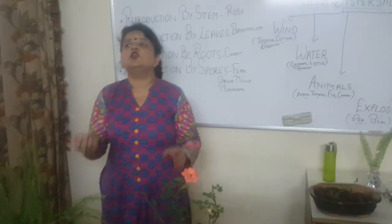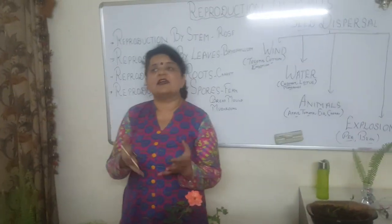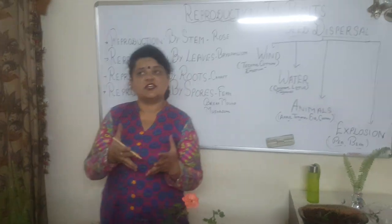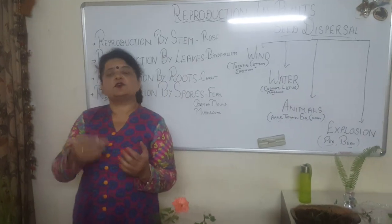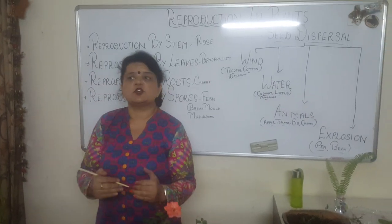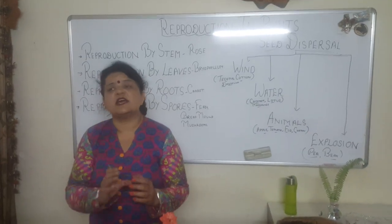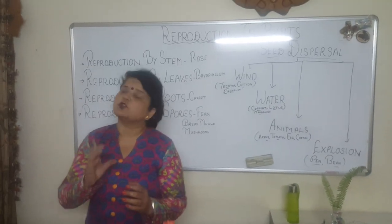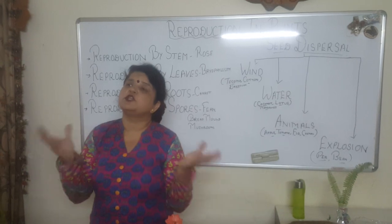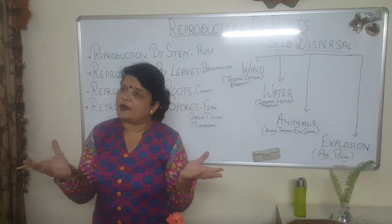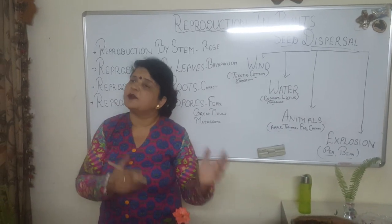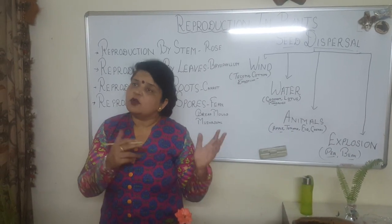Moving on to reproduction by root — you can take carrot and radish and put them in the soil. Each carrot and radish is going to grow into a new plant. This is reproduction by root.